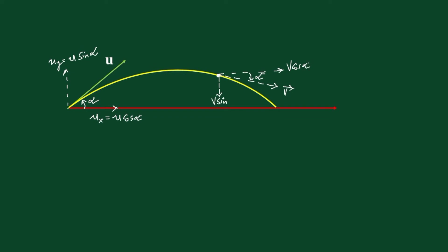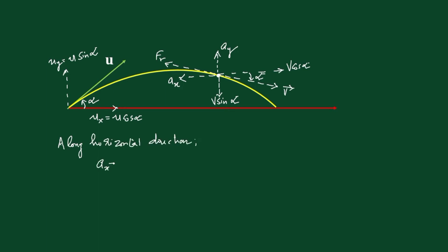Since the medium exerts a resistive force, and resistive force is always opposite to the direction of velocity, we can draw the resistive force in the direction opposite to the velocity vector, taking it as fr (resistive force). Because of this force, the body has acceleration along x and y direction — ay along y direction and ax along x direction.